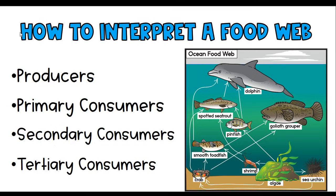Those are some different questions you might be asked about a food web — whether an organism is an herbivore or omnivore, what types of things they consume, or which number they are in the food chain: primary first, secondary second, or tertiary third. I hope this video has helped you interpret food webs and given you a little bit of a start. If you'd like some practice problems that go along with this, I have a Google form that goes directly with this video where students can work through practice problems using these images to interpret food webs, and it autogrades itself. Let me know if you have any questions in the comments, and don't forget to like and subscribe and check back for more videos.